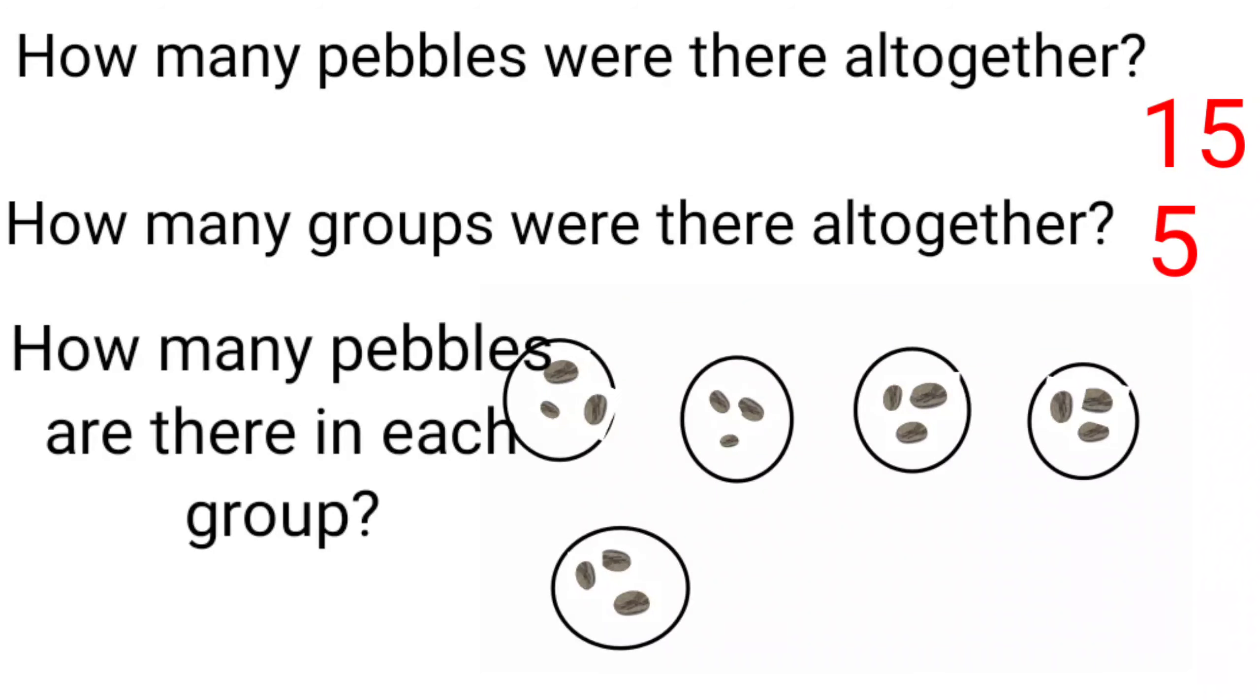Now, how many pebbles are there in each group? There are 3 pebbles in each group. So, how can you write the division fact? The division fact can be written as 15 divided by 5 equal to 3. So, that is all about the introduction to division.